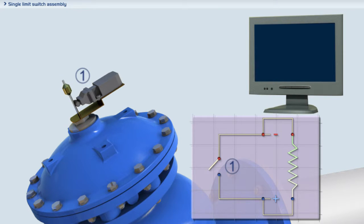The single limit switch assembly is equipped with one electric switch which sends a signal to a control system when the Bermod 700 series valve is in the closed position.